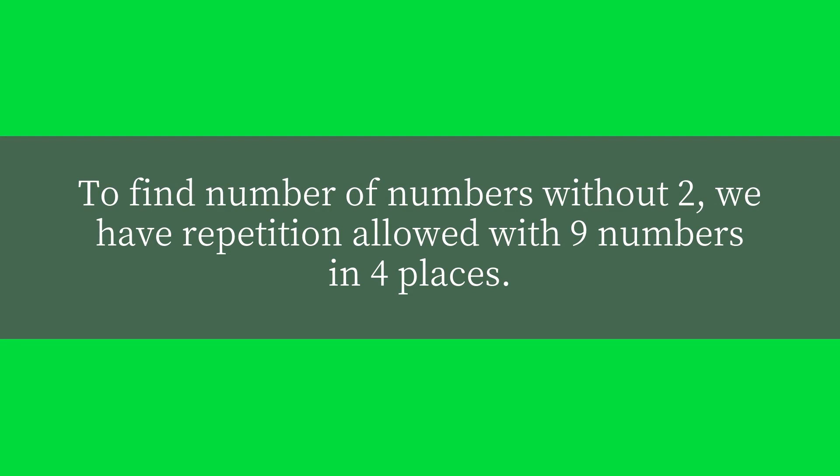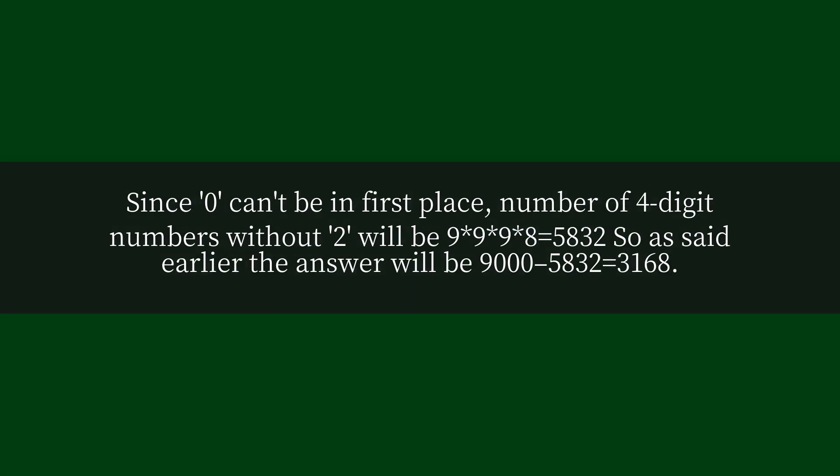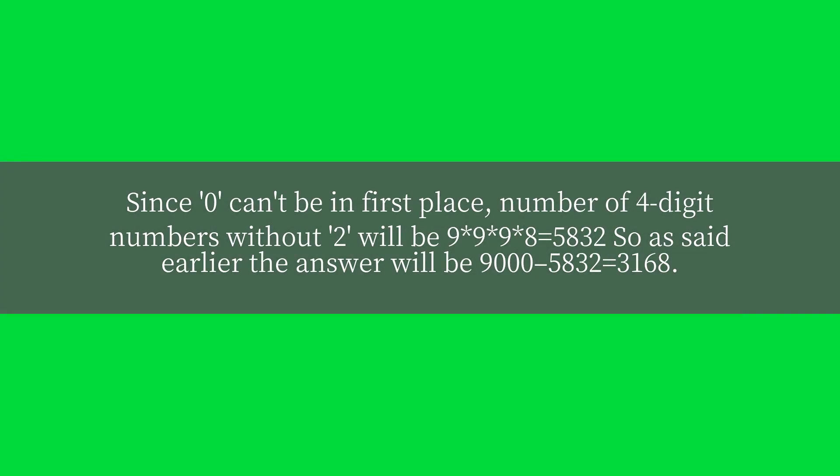To find the number of numbers without 2, we have repetition allowed with nine numbers in four places. Since zero can't be in the first place, the number of four-digit numbers without 2 will be 8 × 9 × 9 × 9 = 5832. So as said earlier, the answer will be 9000 - 5832 = 3168.